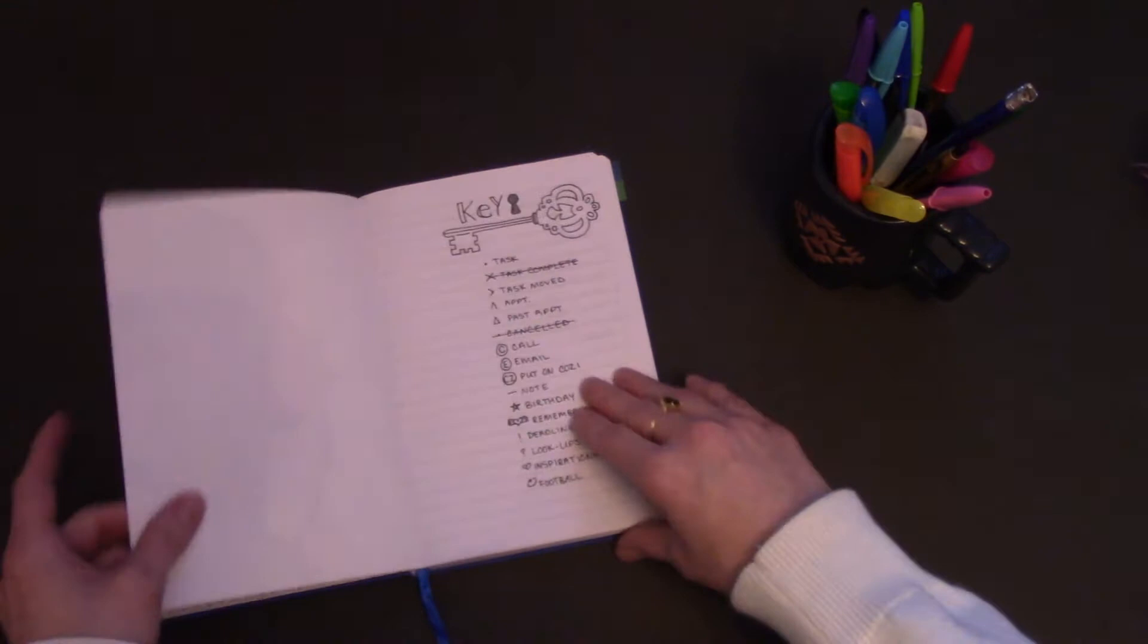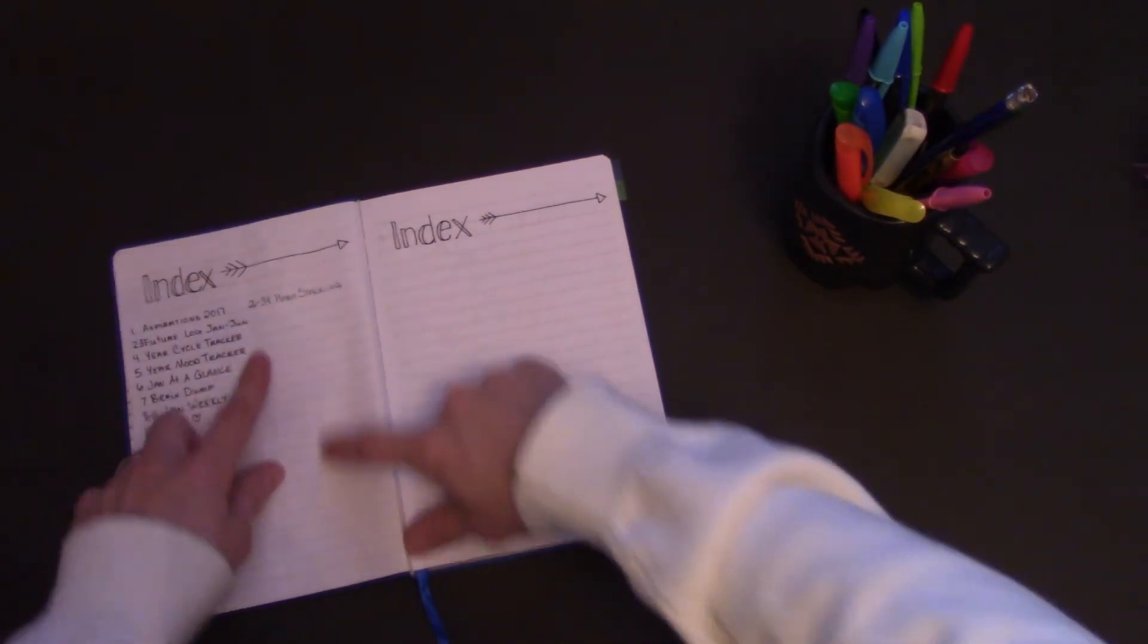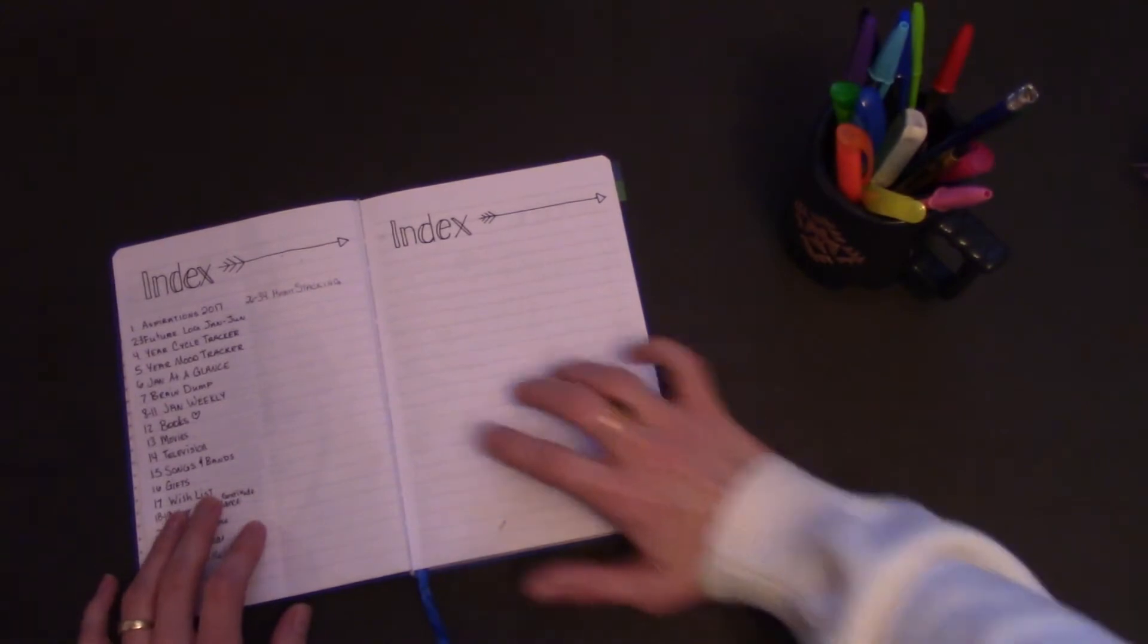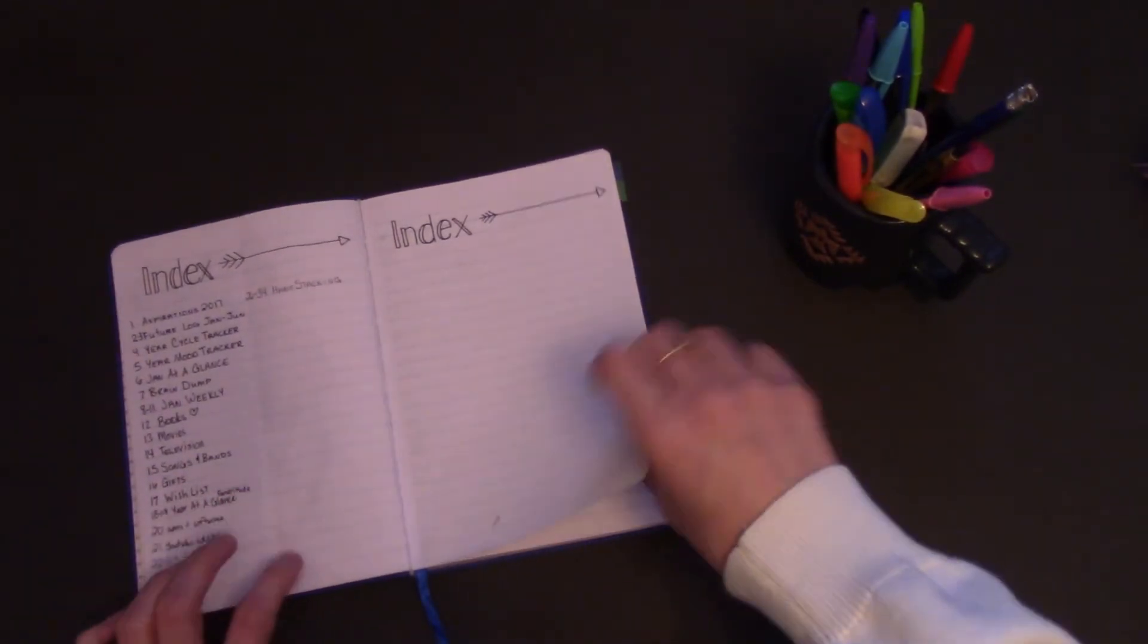So this is my journal. I've got the key, the index, which I've decided to fold in half because it's only been a week and I'm already on page 34. So I know I'm going to move through this pretty quickly.